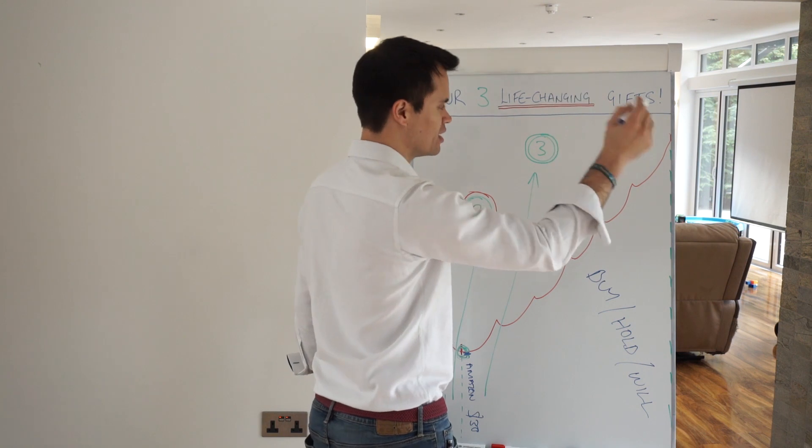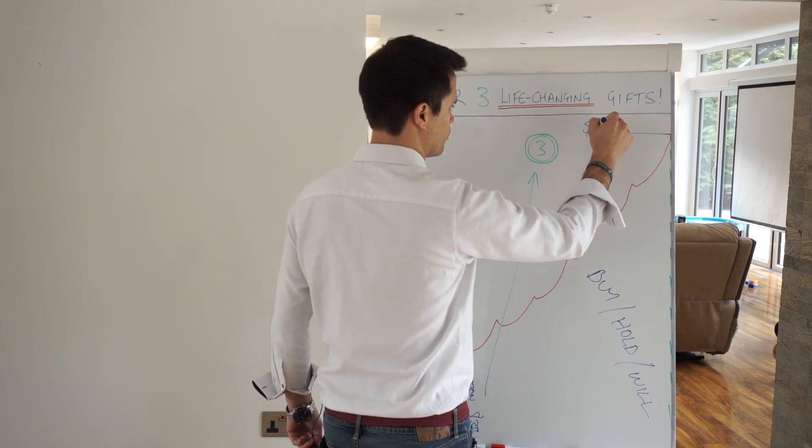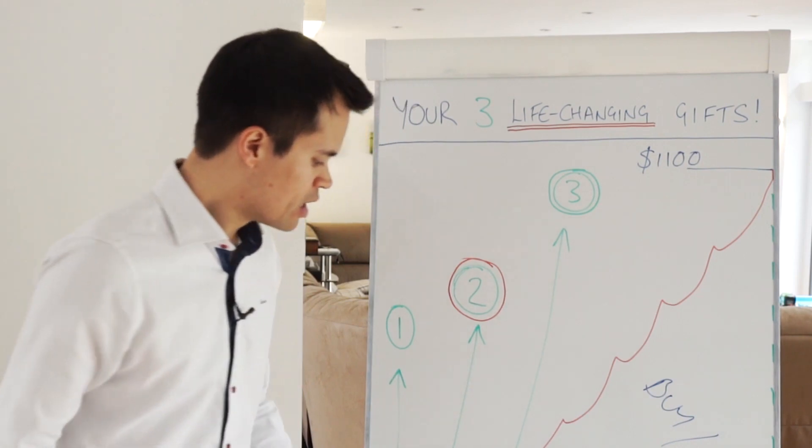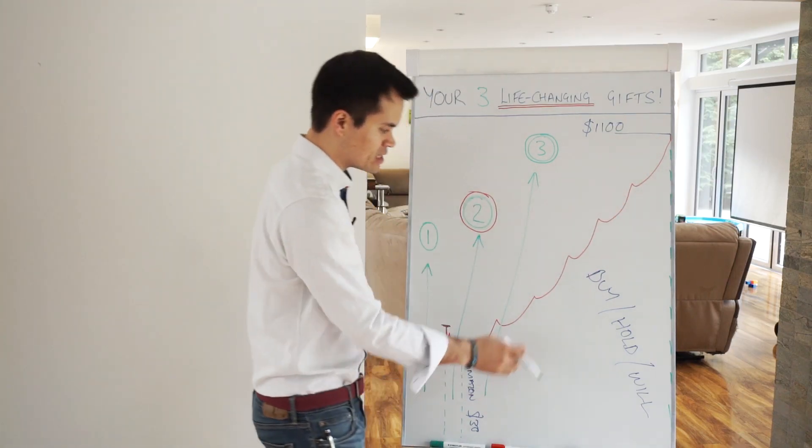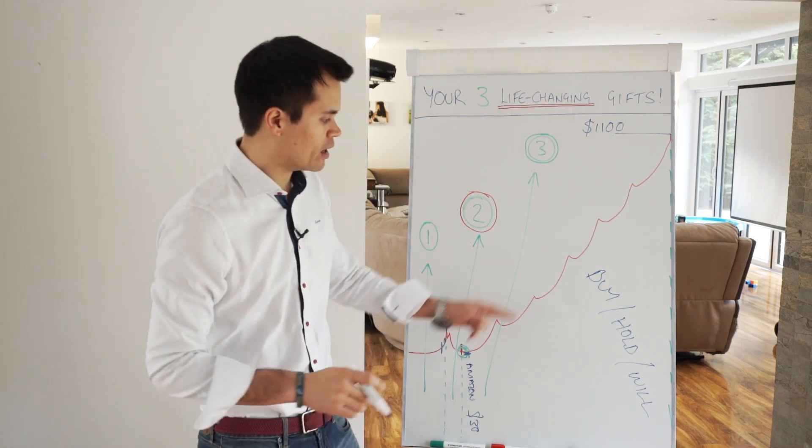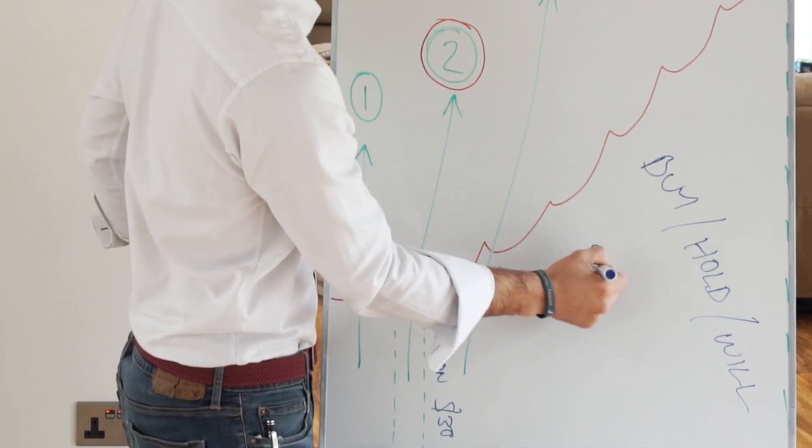Up here in 2017—I haven't checked the price recently—but around 2018 the price is eleven hundred dollars. That is the paradigm shift. You're going to make way more money in stage three with the third gift, but the third gift will be twenty-plus years.